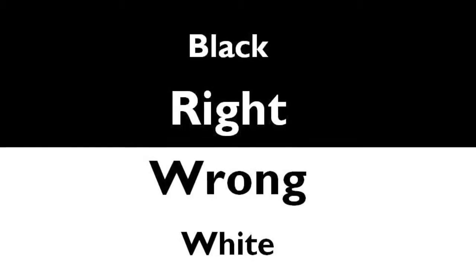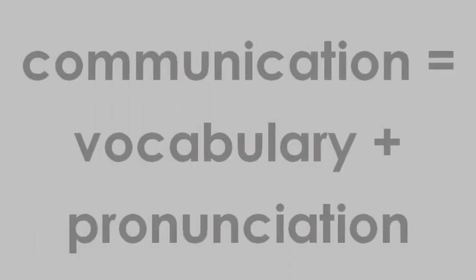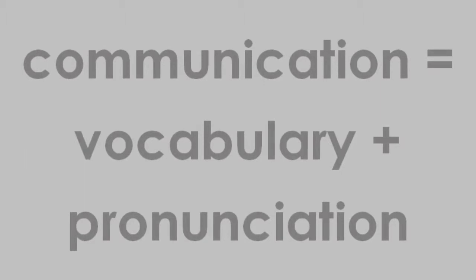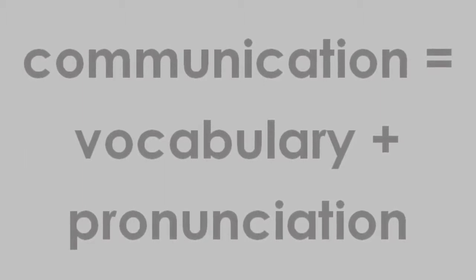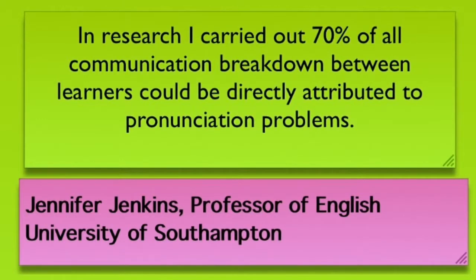The English that students study at school and need for passing exams is all about grammatical accuracy. Language is either right or wrong — it's very black and white. Real communication, however, is much more of a grey area. It's about conveying or understanding a message, and what's important is having the right vocabulary and being able to pronounce it. In fact, one study showed that 70% of communication breakdown between learners was due to pronunciation problems.